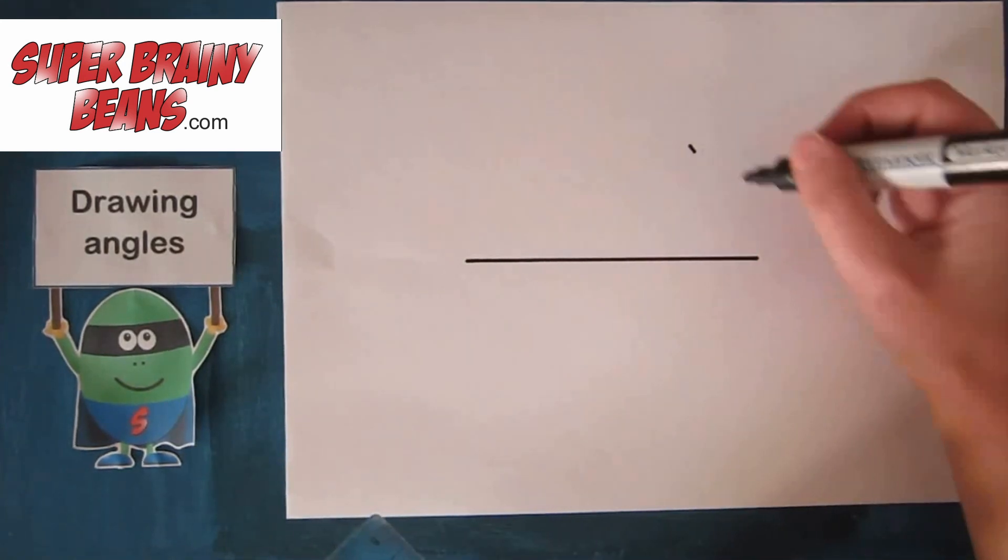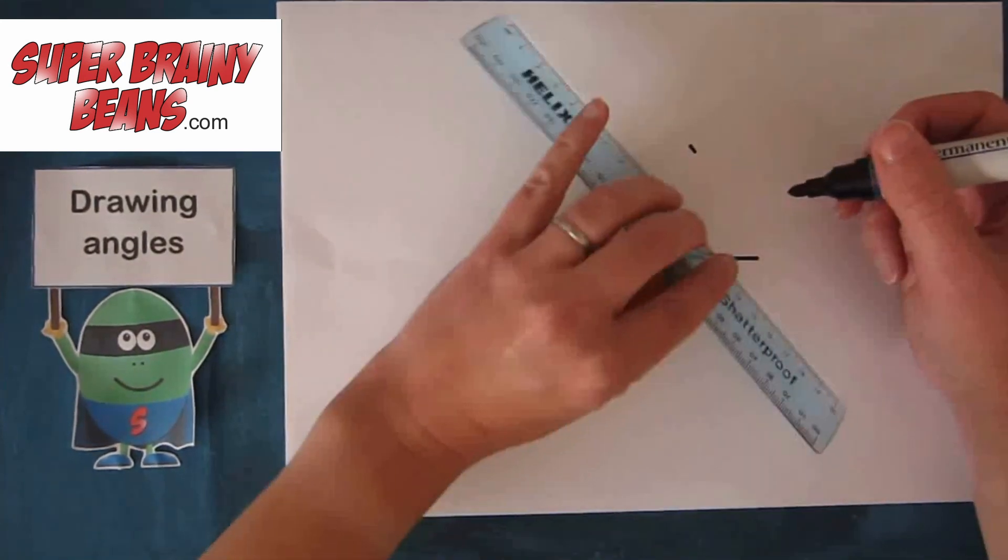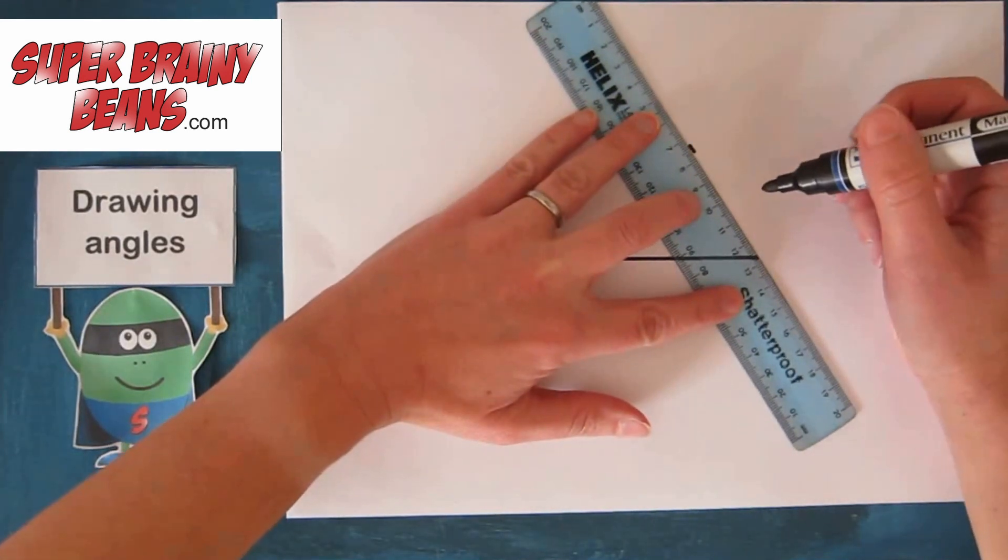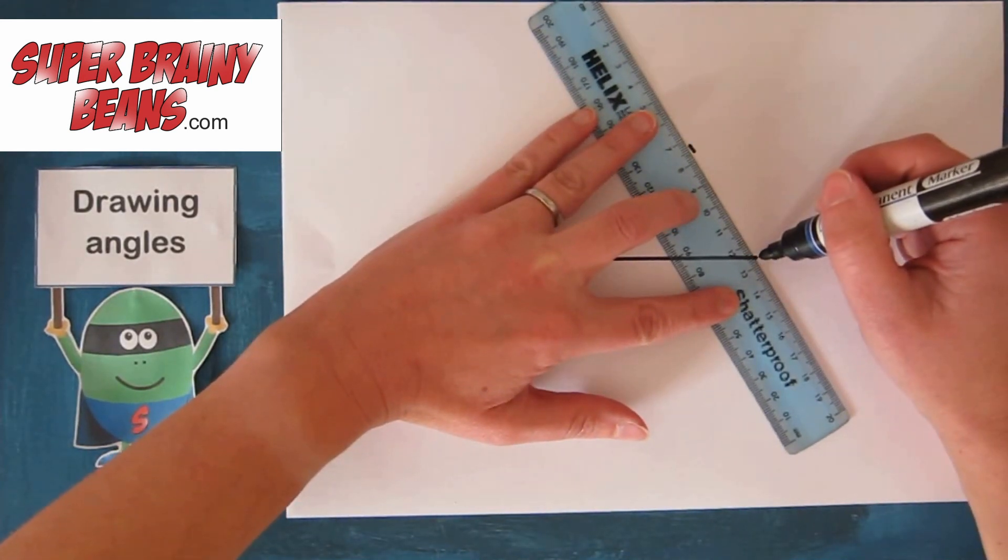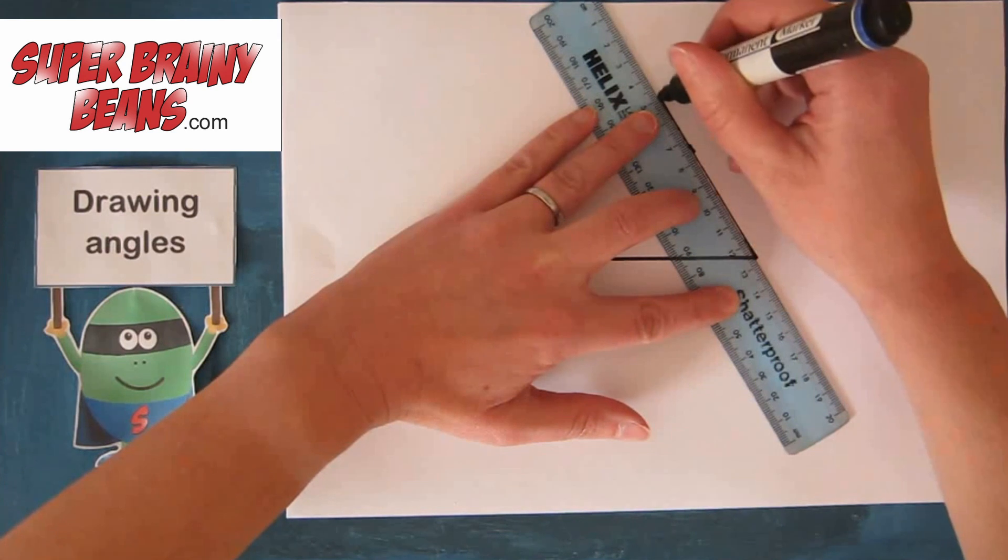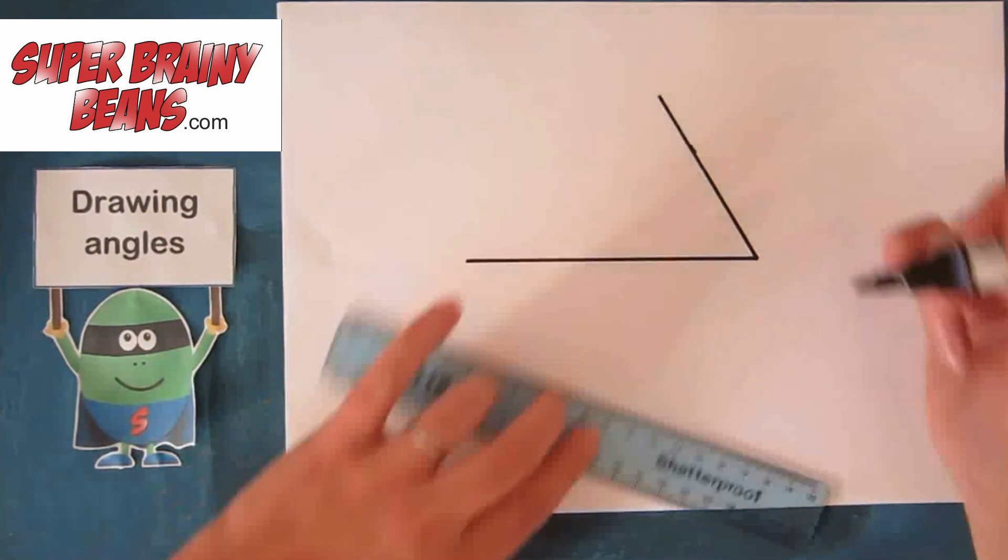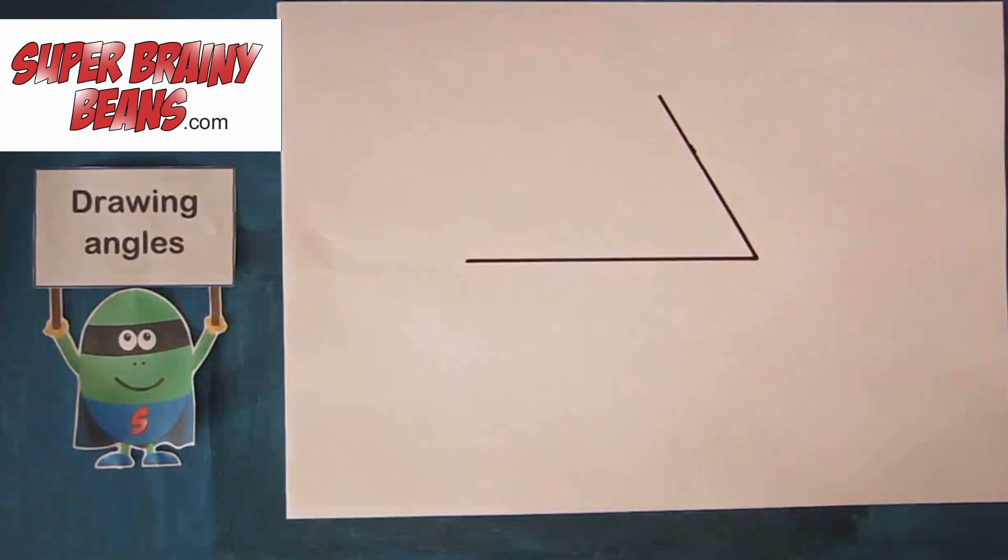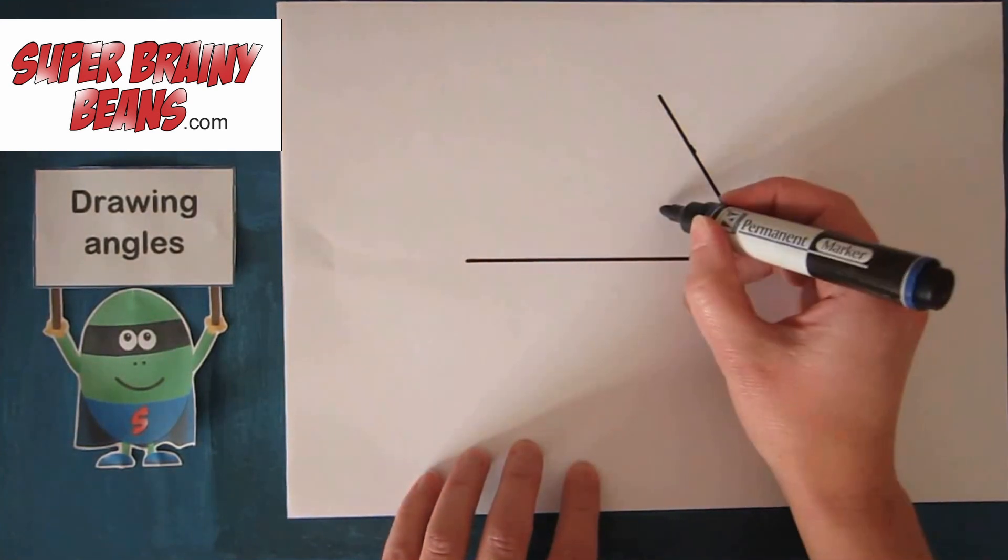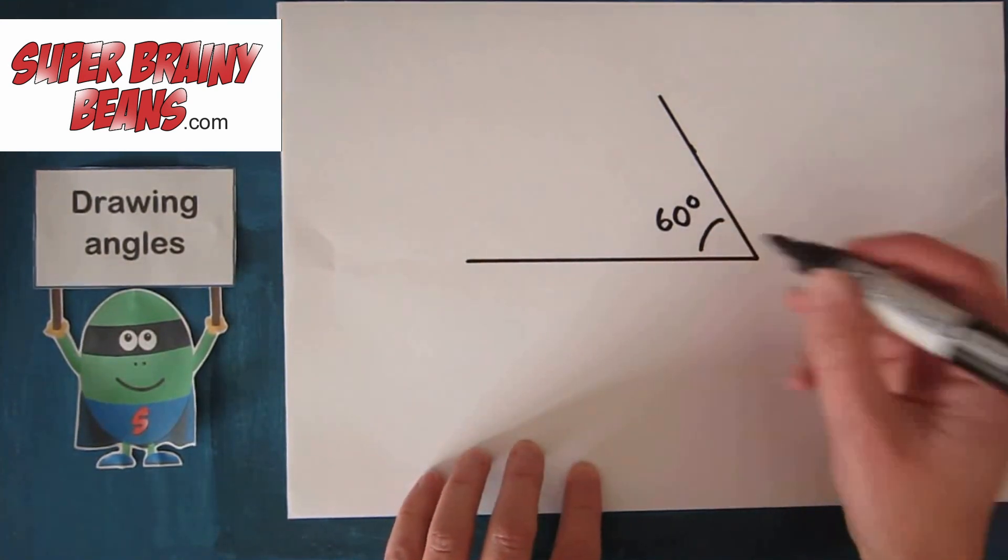Then with this mark and the dot here, the end of the line, we're going to use our ruler and join it up. And this is your 60 degree angle.